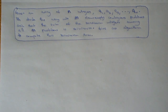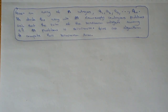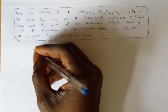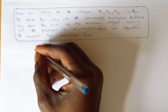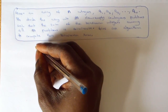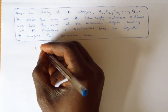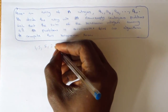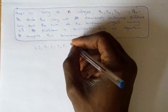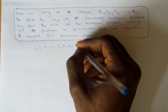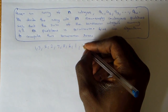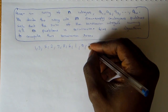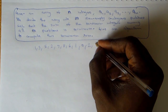Let me explain what this problem means. Suppose we have this array: A = [1, 3, 5, 2, 7, 8, 6, 1, 0, 2, 9].